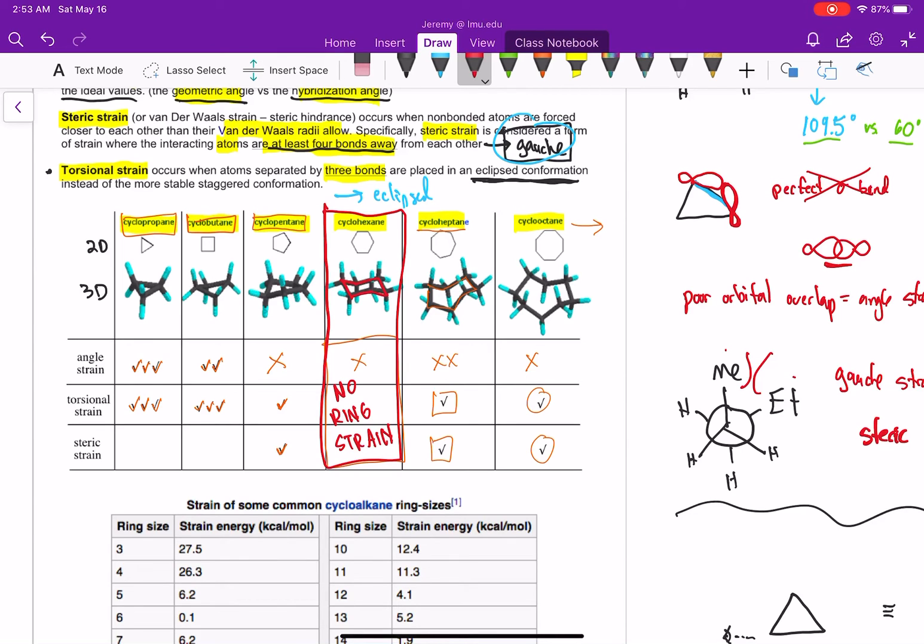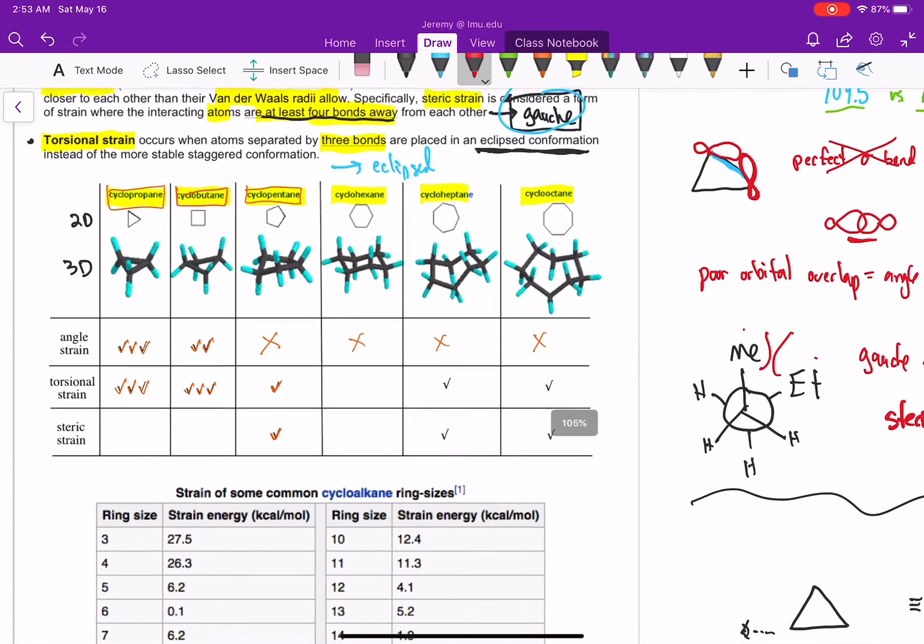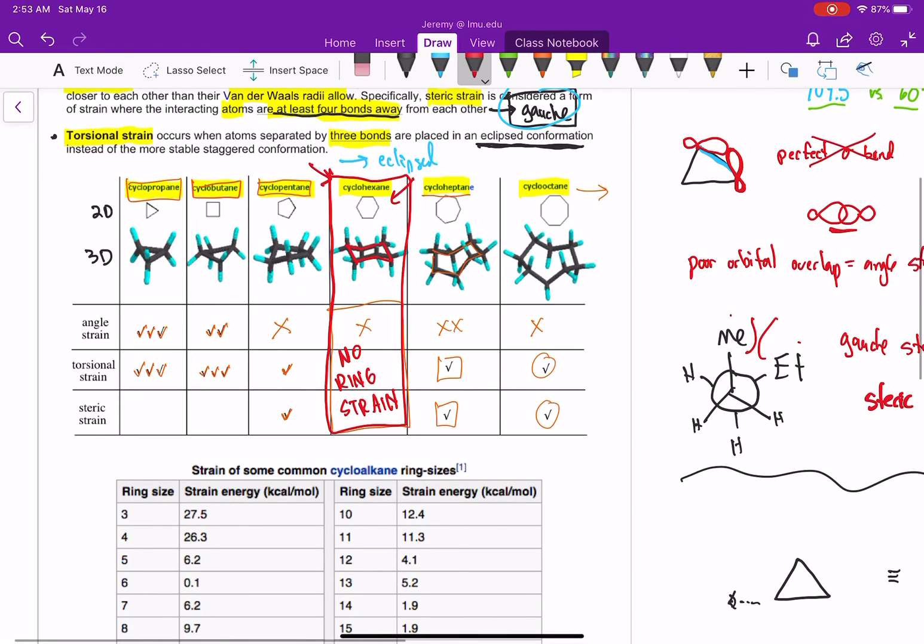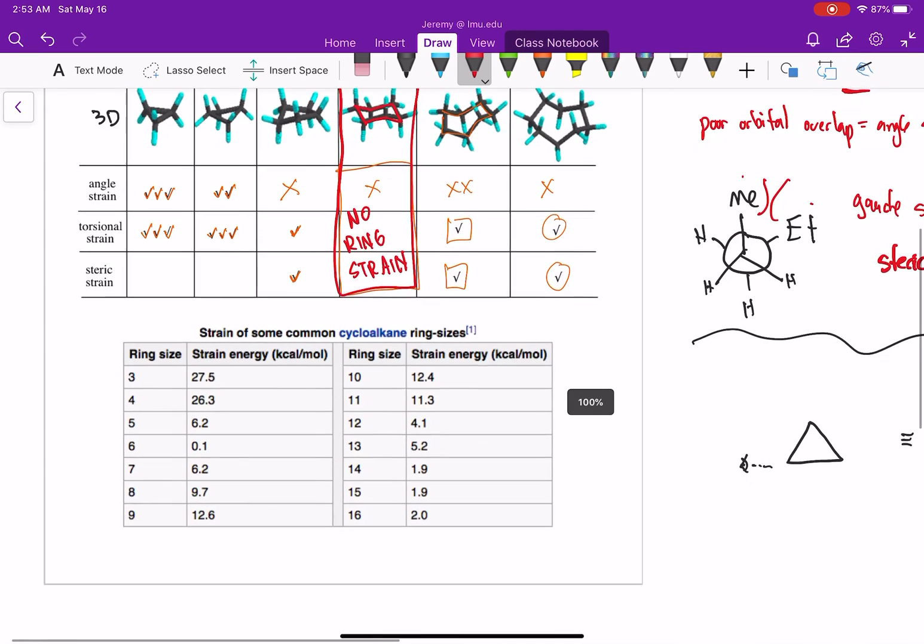And actually, our next lesson, our next video is going to be focusing on how to draw cyclohexane. So if you think about rings, what do you think the most common ring is that's found in nature? Obviously, it's cyclohexane because it has the least amount of strain.